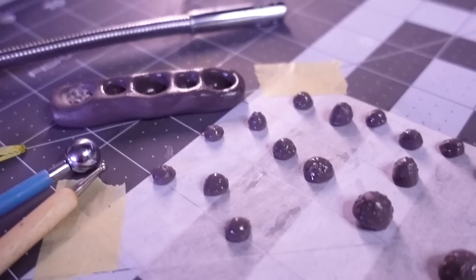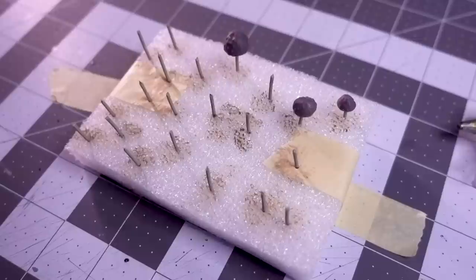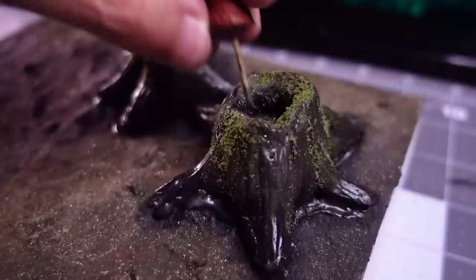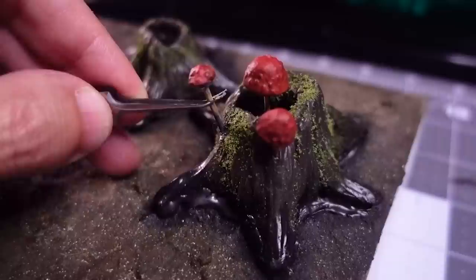I then hot glued the caps to the stems and watched the fungal infection spread across my workspace. I then slapped on a few layers of paint and washes until I was happy with the color. After drilling holes in my stumps, I inserted the wire stems.